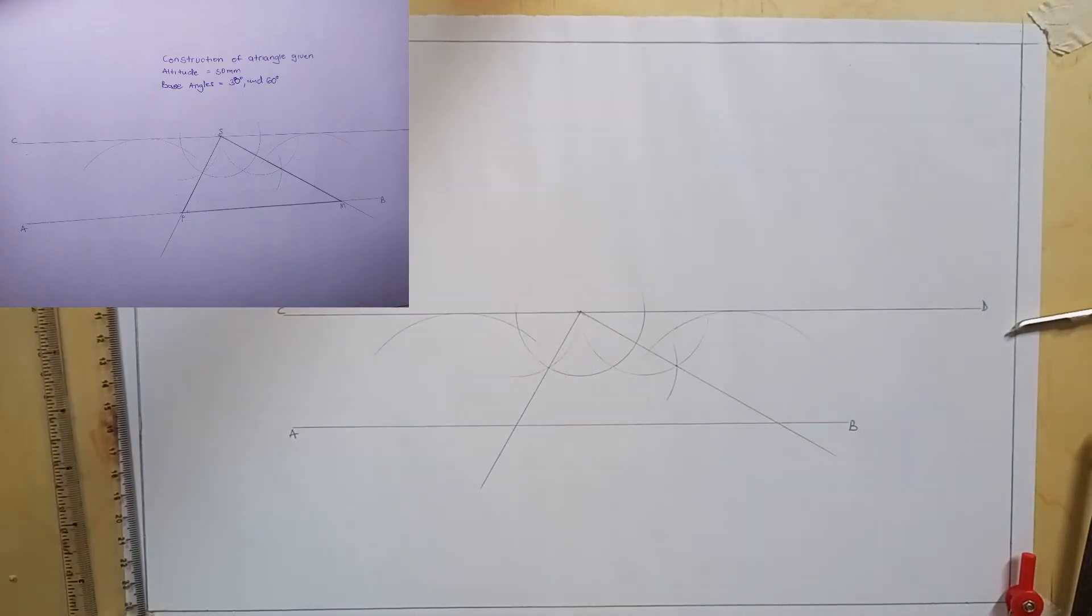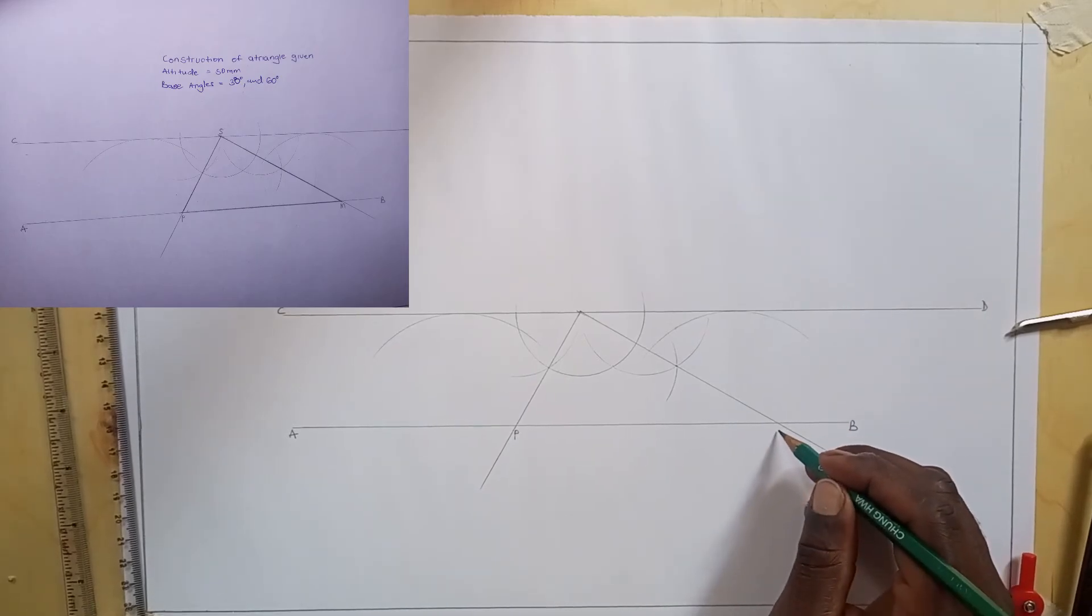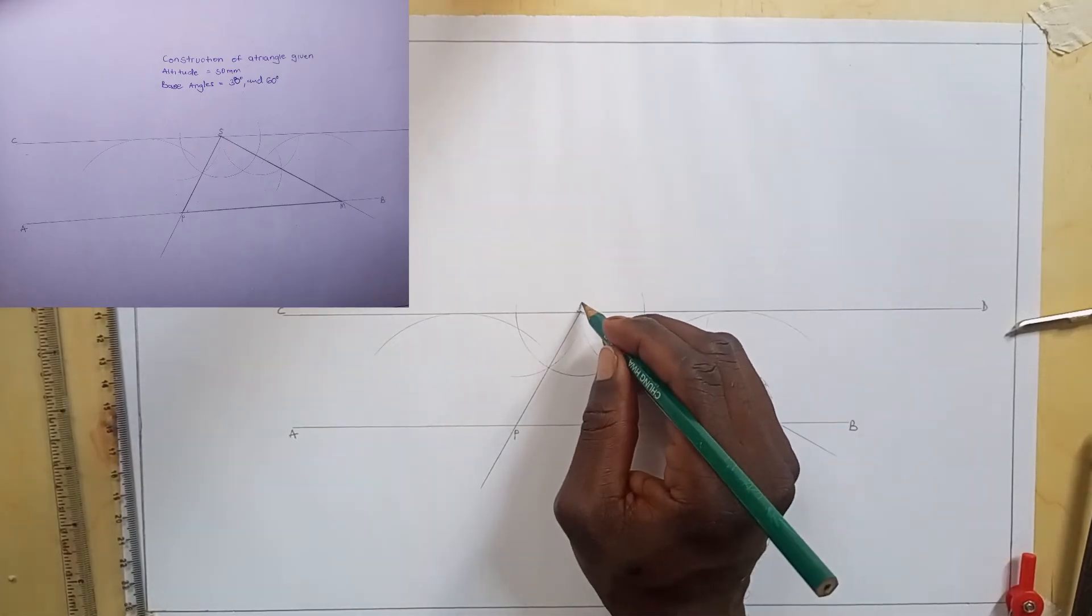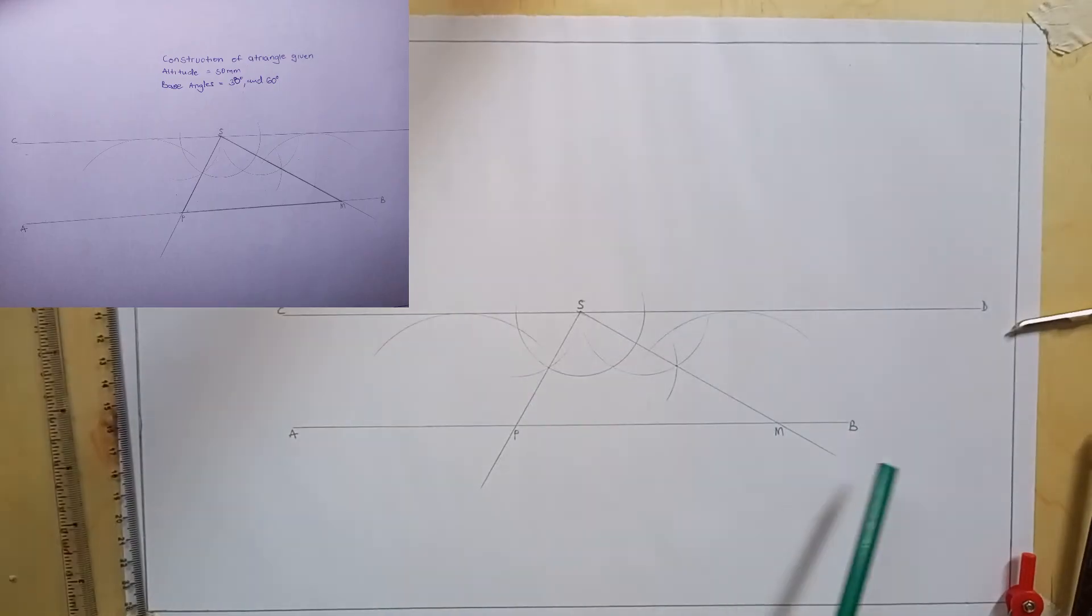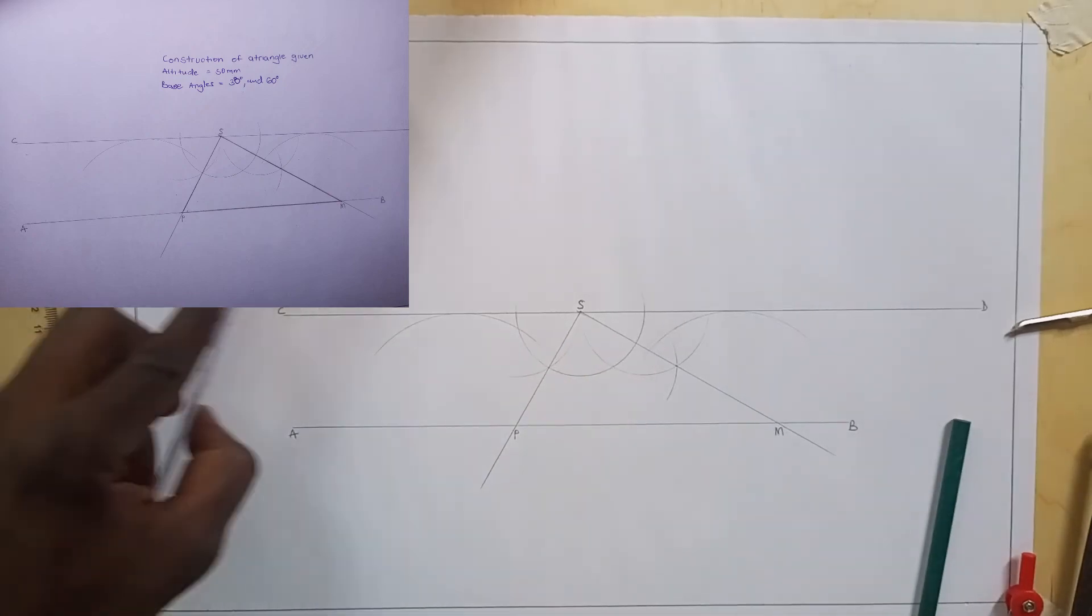We are going to name these points. We shall call this point P, M, and we can call this point S. So you find that triangle PMS is our required triangle.